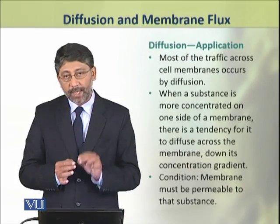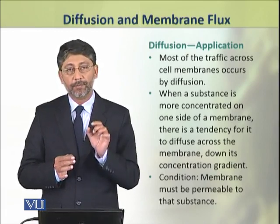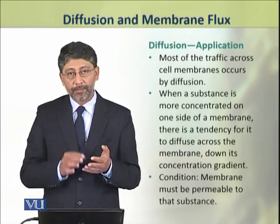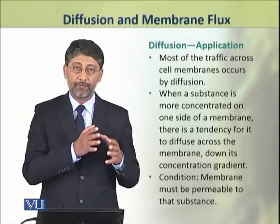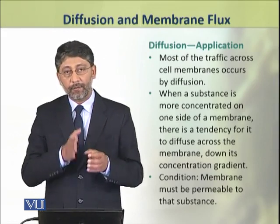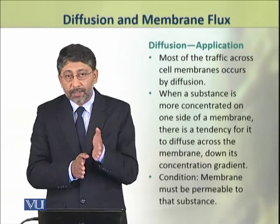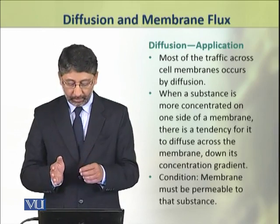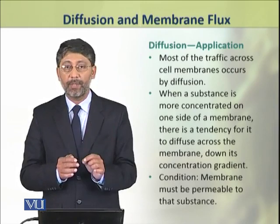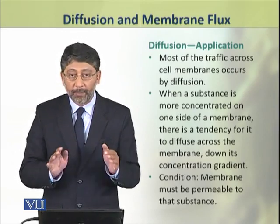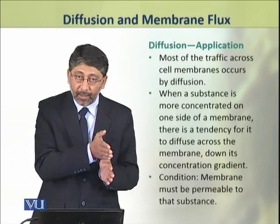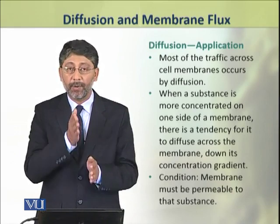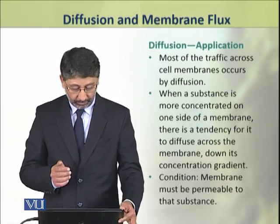In cells, most of the traffic of substances takes place by diffusion. When a substance is more concentrated on one side of the membrane, there is a tendency for its movement from that side to the other side where it is present in low concentration. However, the membrane must be permeable to such movement — it must be permeable to that substance.